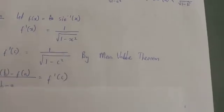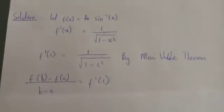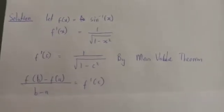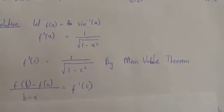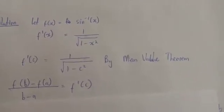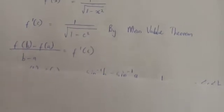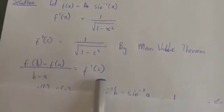Replacing x with c, we get f'(c) = 1/√(1−c²). By the Mean Value Theorem, we state that [f(b) − f(a)] / (b−a) = f'(c).